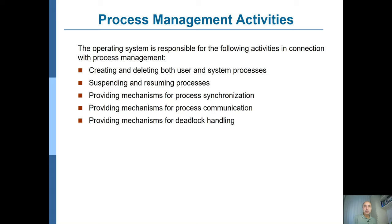The operating system should provide means for creating and deleting both user and system processes. It should be able to suspend processes, for example when running short of memory, and later resume them from where they were left. It should also provide mechanisms for synchronization between processes — which we'll spend a couple of chapters on — as well as process communication. When doing synchronization it is possible to hit deadlocks, and the OS should have means for handling them.